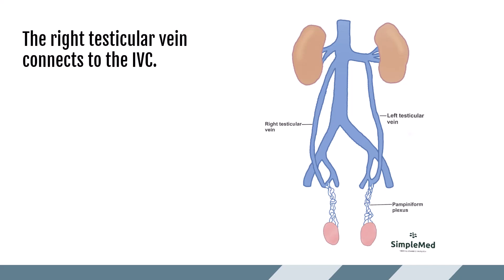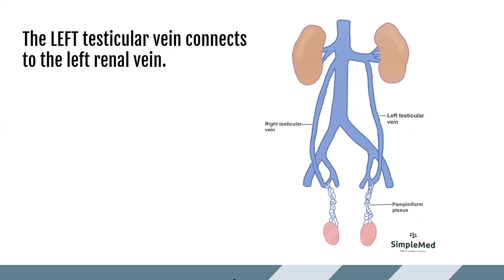The pampiniform plexus eventually reduces to about three or four veins exiting through the inguinal ring into the abdomen, and these veins converge again to form the testicular vein. On the right side, the right testicular vein connects directly to the IVC. On the left side, the left testicular vein connects to the left renal vein. This is an important concept when discussing varicoceles, as varicoceles are more common on the left side due to how the left testicular vein connects into the left renal vein.